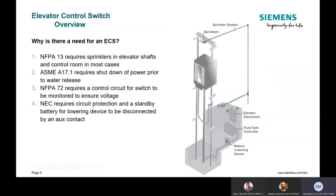Here's a diagram that shows a typical layout of an elevator shaft and where the components would be within that shaft. I'd like to talk about how the different components communicate with each other and the order in which this switch operates. The first thing that's going to happen during a fire event is a fire detection device, like a smoke detector, will send a signal to the fire alarm control panel. Next, that fire alarm control panel will then trigger the fire alarm, contact the fire department, and return the elevator to the ground floor. Once the elevator reaches the ground floor, the doors will open and allow passengers to depart.